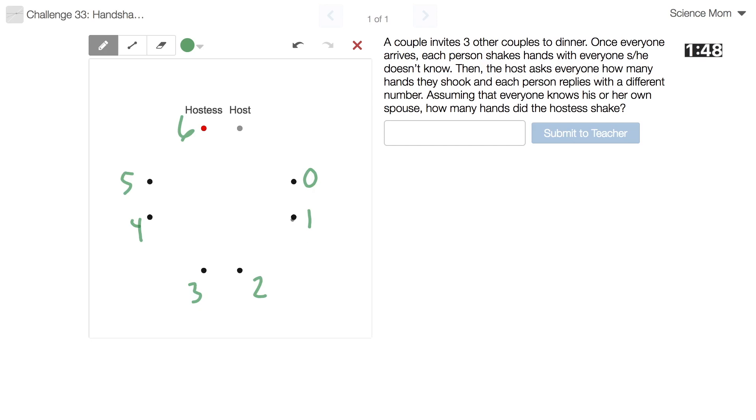So could the hostess have shaken six hands? Yeah. And that's the most that anybody can shake if each person knows their spouse. Like that's the highest possible. So if she's shaking six hands, are all six of the other numbers possible? No. So you've narrowed it down. She did not shake six hands. Someone else did. Well, the host can be any number. Don't worry about him. His number doesn't matter.